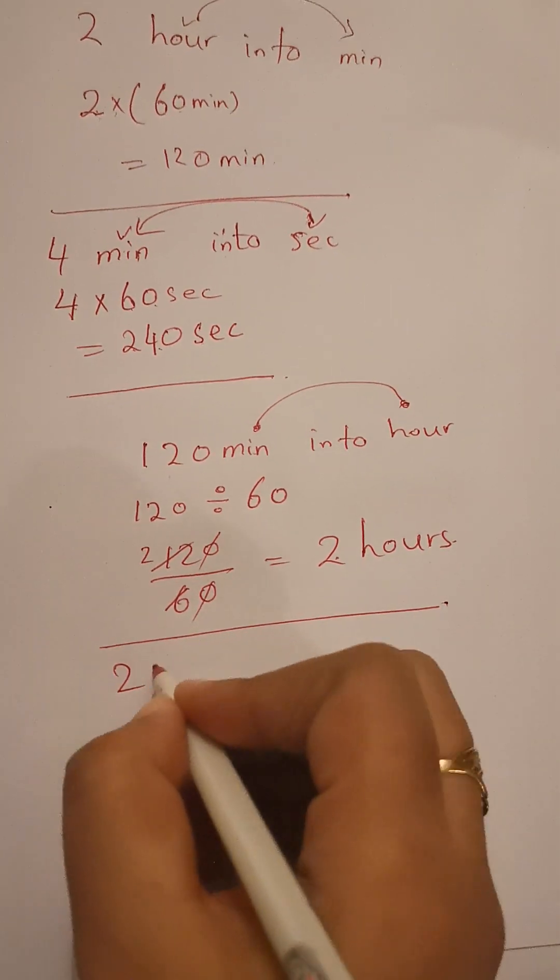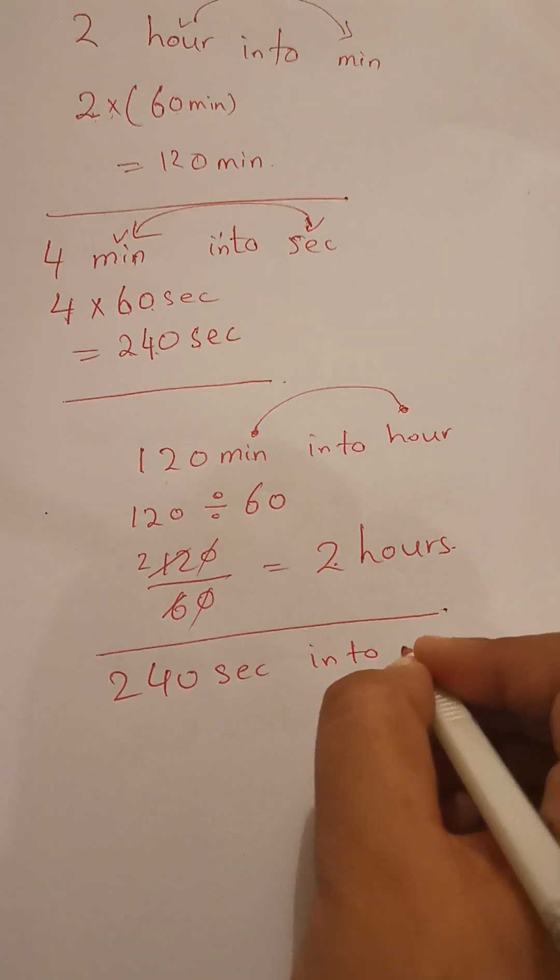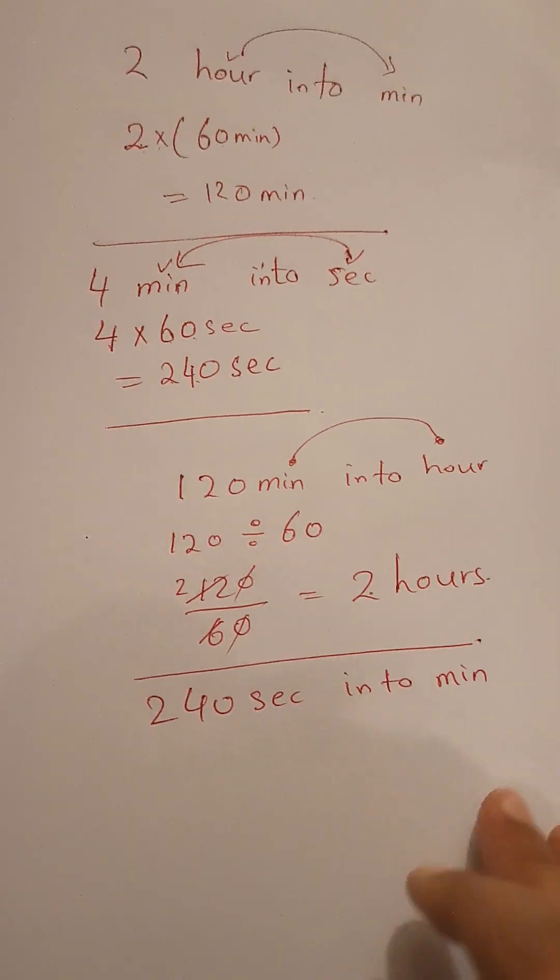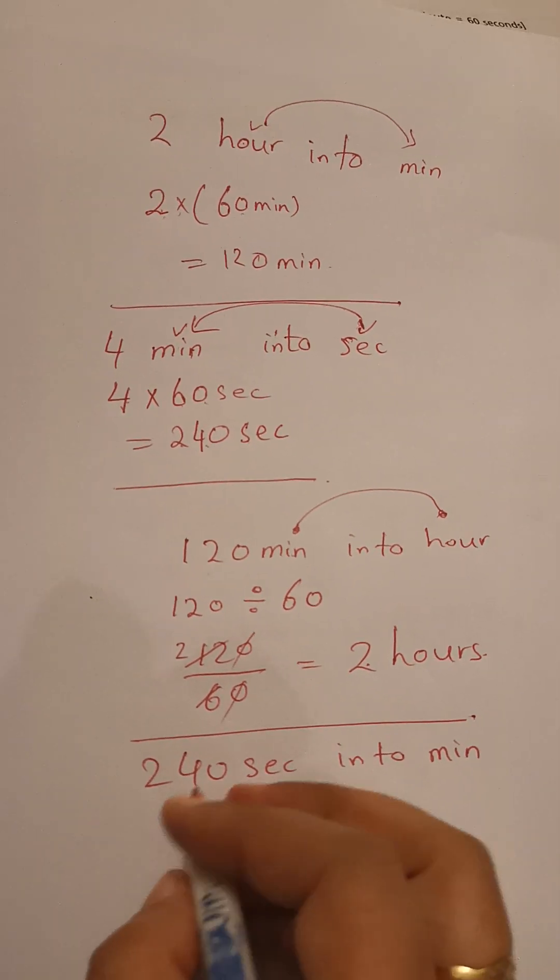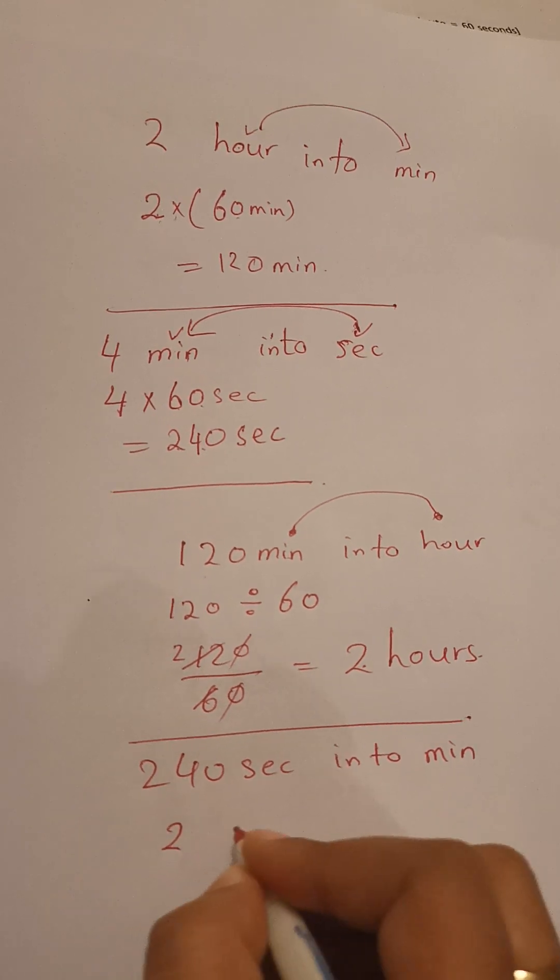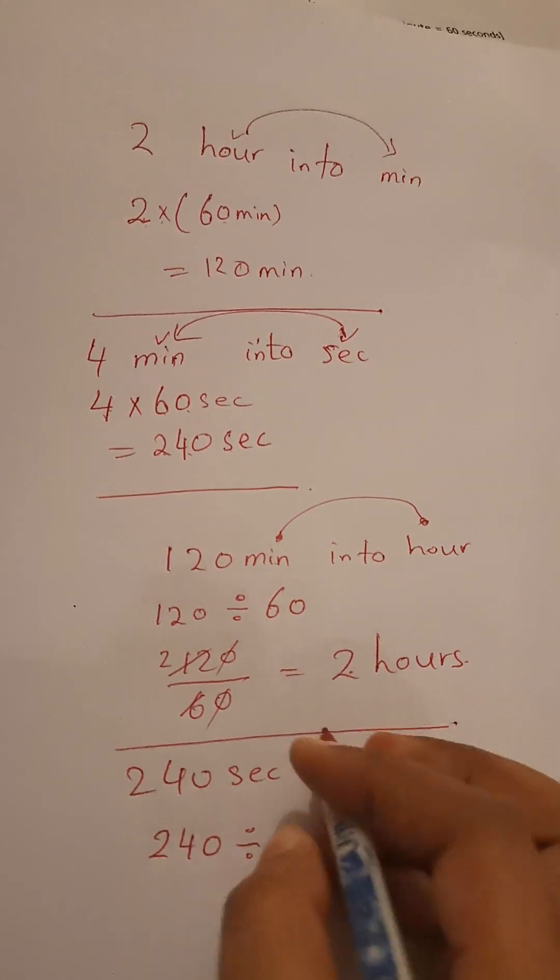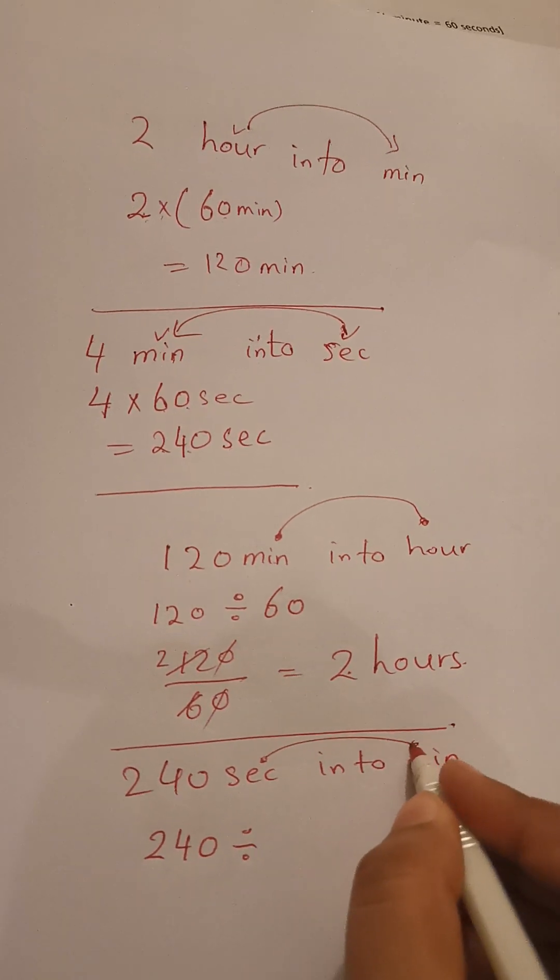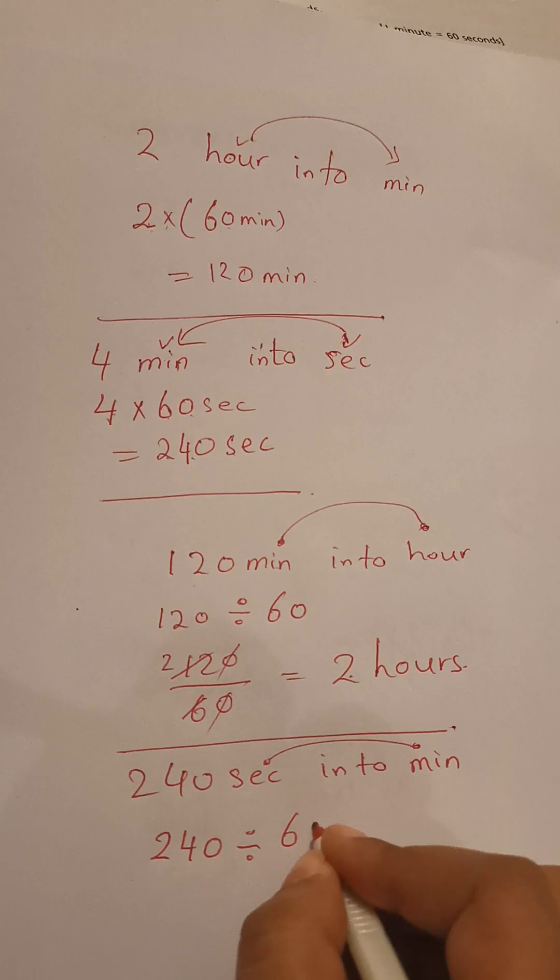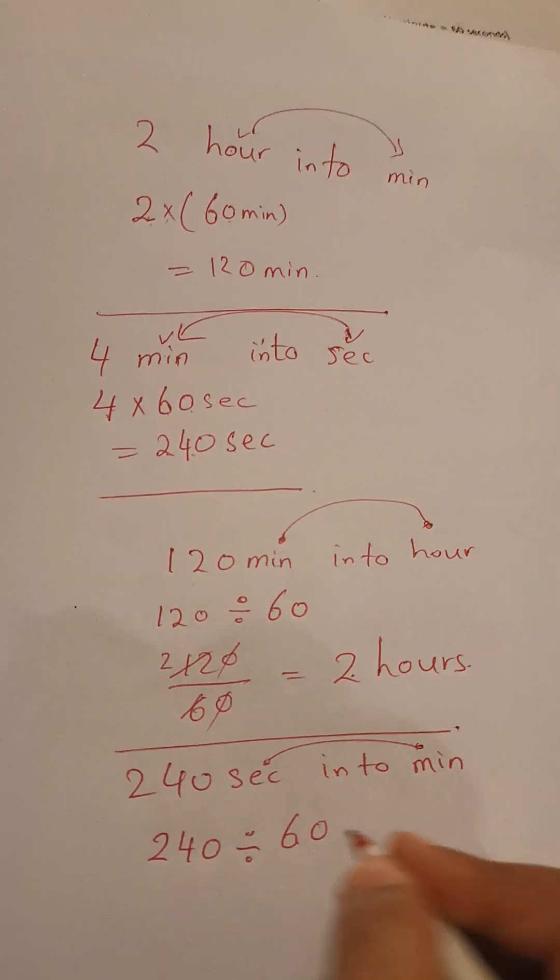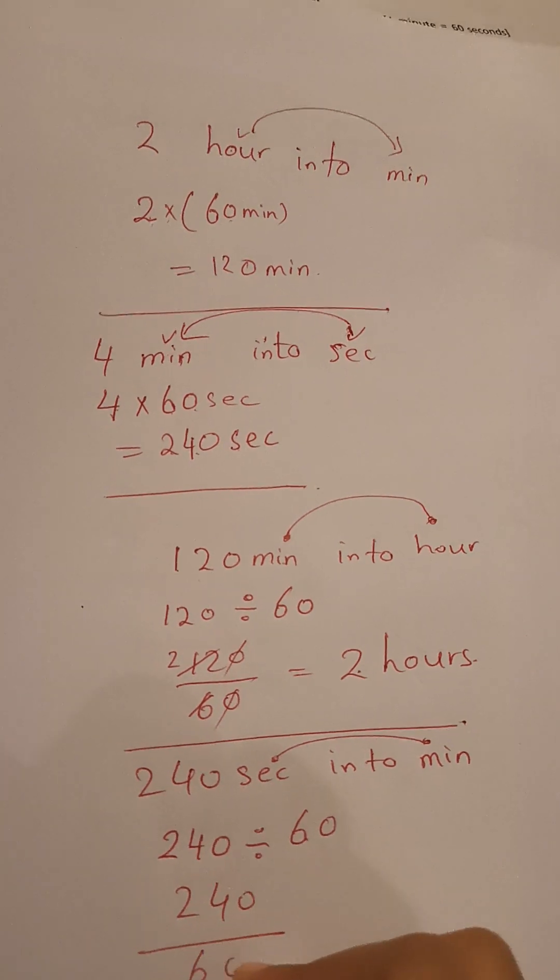Suppose 240 seconds into minutes. So 240 divided, because from small to big. How many seconds in one minute? 60. At the place of seconds we write 60. It's 240 divided by 60.